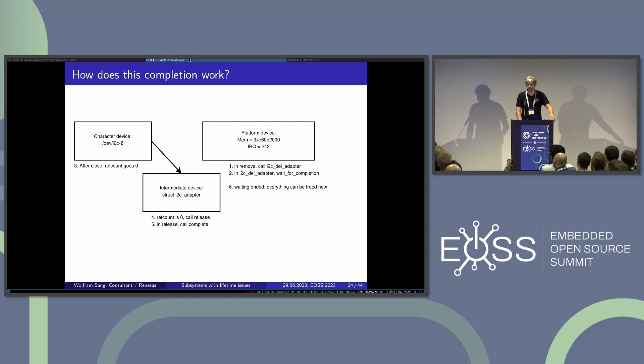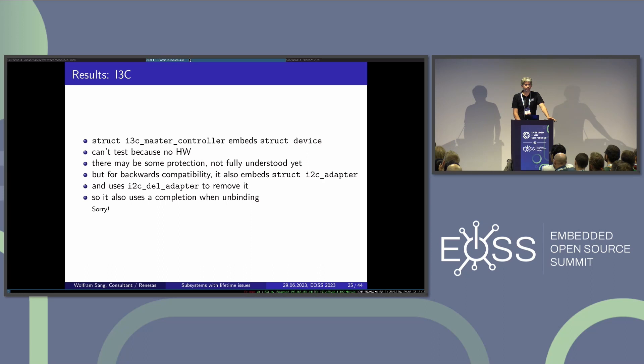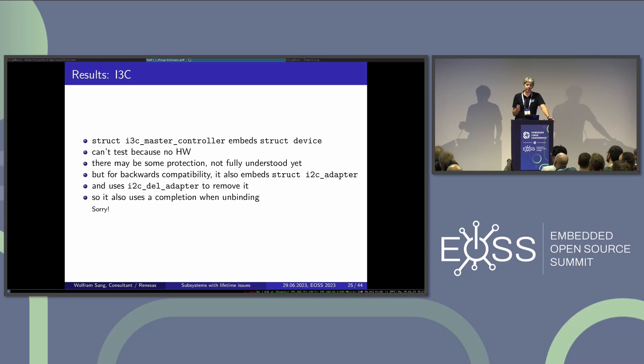Ideally it would return right away, and if user space tried to connect to the I2C dev device it would say 'sorry, all my functionality is gone,' and keep saying it until user space gives up. There are other subsystems with the same protection approach. I3C embeds a struct device in the master controller — I couldn't test it because I don't have I3C hardware. Sadly for I3C they have I2C backwards compatibility, so they embed struct i2c_adapter and use i2c_del_adapter to remove it — so I3C is caught with us and needs to wait until I2C is fixed.